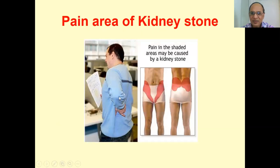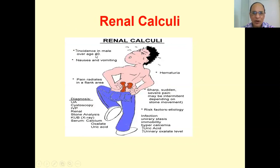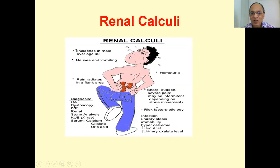On clinical pictures: renal angle tenderness indicates a possible stone. The pain pattern is loin to groin — from the flank area — as shown on the diagram. Symptoms include sudden, sharp, severe, intermittent colic pain depending on the stone movement, and there may be nausea and vomiting.